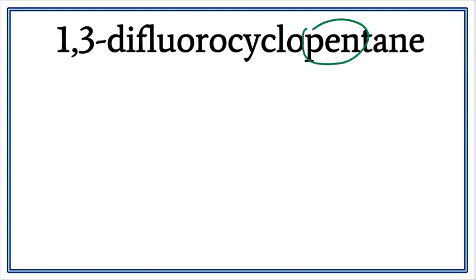Pent right here tells us that there are five carbons present in the longest carbon chain. Aine here tells us that this is an alkane, meaning that there are only single bonds between carbons.